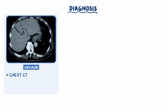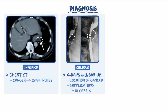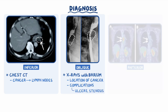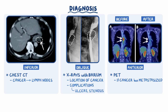Chest CT can be used to evaluate if the cancer has spread to nearby lymph nodes. X-rays with barium contrast of the upper GI tract can be useful to identify the location of the cancer and complications like ulcers or esophageal stenosis. Positron emission tomography, or PET, is useful to see if the cancer has metastasized and to evaluate the response to chemotherapy.